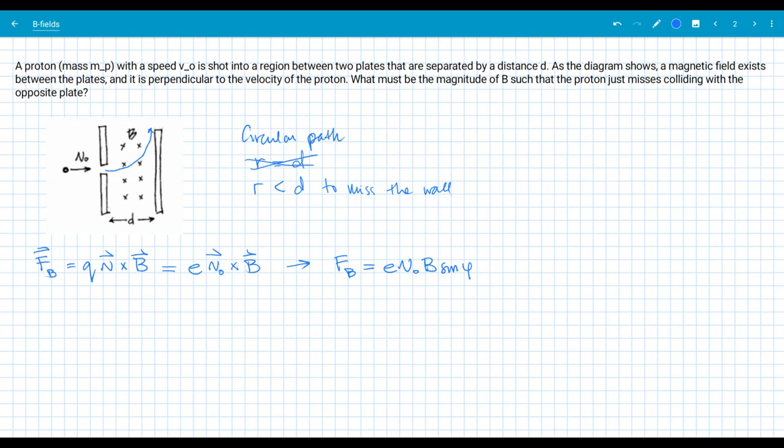And we're told here that b is in and out of the page, v naught is in the plane of the page here. So that means that sine phi is equal to 1. And that's because phi is equal to 90 degrees in this case. So that simplifies the magnetic force to just e, v naught, b. Nice and simple.